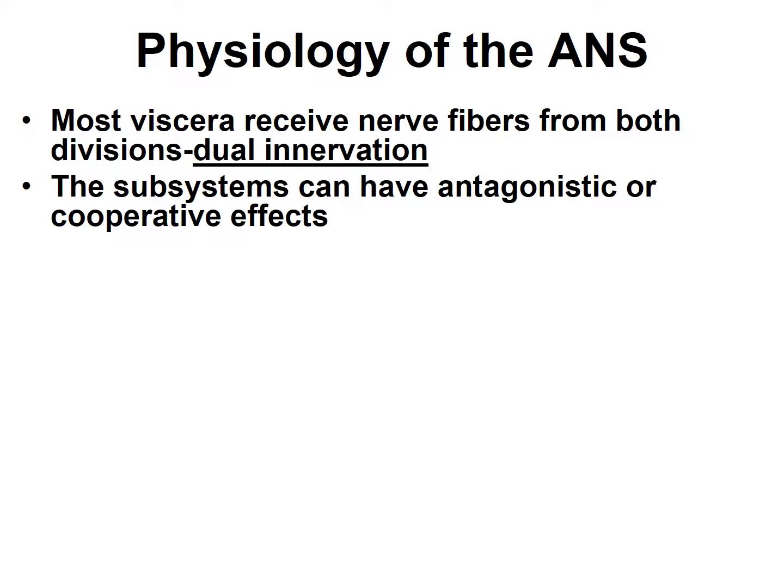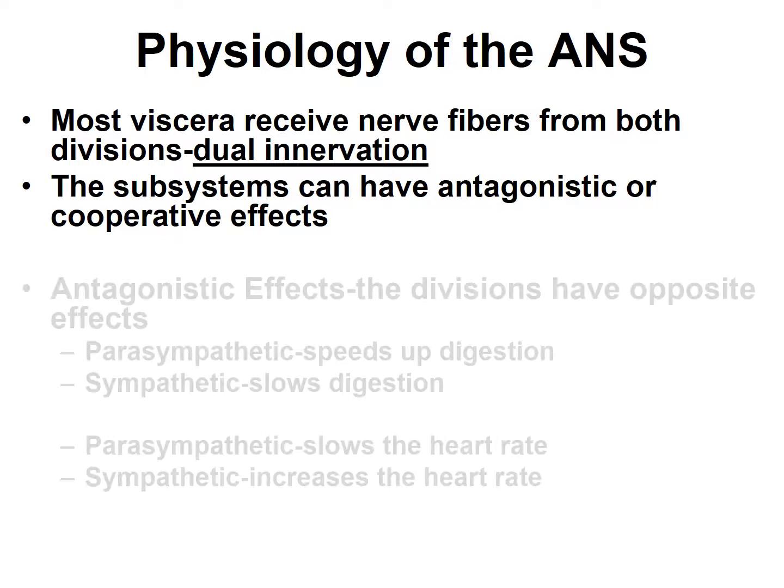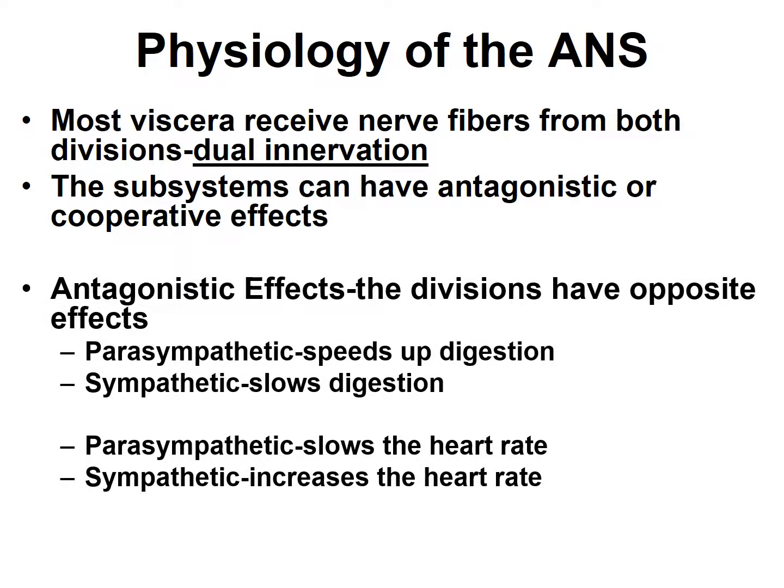Most of our visceral organs receive nerve fibers from both the sympathetic and parasympathetic divisions — in other words, they have what we refer to as dual innervation. However, these subsystems can have antagonistic or cooperative effects. Usually they are antagonistic, but sometimes they have cooperative effects. Let's look at the antagonistic effects because they are the most prevalent.